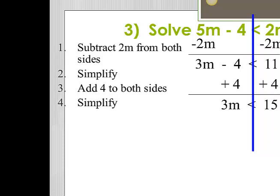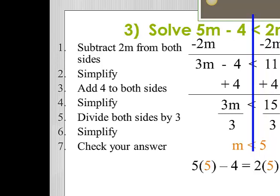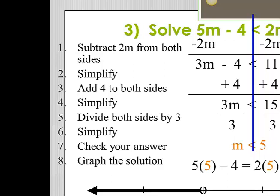Now I need to get m all by itself, so I'm going to divide both sides by 3. When I do that, I discover that m is less than 5. When I do the check, I'm going to substitute in the value of 5 for m. So this looks like 5 times 5 minus 4 equals 2 times 5 plus 11. Five times 5 is 25, minus 4 is 21; 2 times 5 is 10, plus 11 is 21 — so the check is good. I need to graph this solution with an open circle on 5 and shade to the left, since the inequality points left when the variable is first.